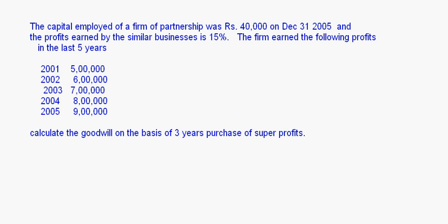First, I'll calculate the average profit. The average profit will be equal to the profits from 2001 till 2005: 5 lakhs plus 6 lakhs plus 7 lakhs plus 8 lakhs plus 9 lakhs, which comes to 35 lakhs divided by 5, giving us an average profit of 7 lakhs.